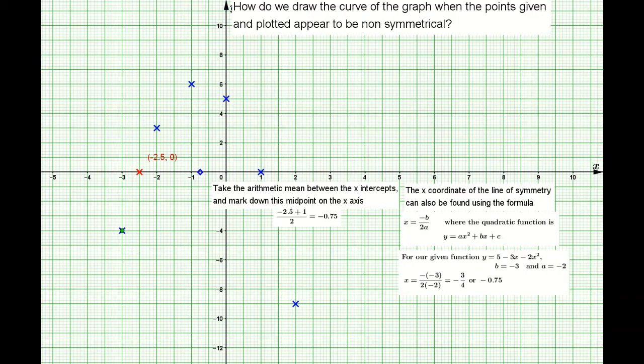I also taught you one trick: the x-coordinate of the line of symmetry is given by the formula negative b over 2a. In a quadratic function y equals ax squared plus bx plus c, a is the coefficient of x squared, b is the coefficient of x. For our given function, a is negative 2 and b is negative 3, so x will be negative of negative 3 divided by 2 times negative 2, which equals negative 0.75.